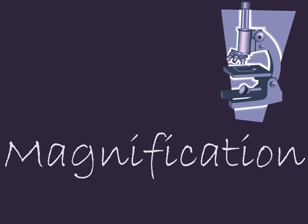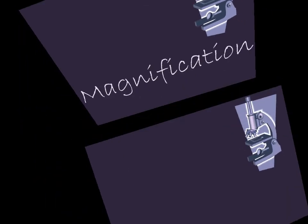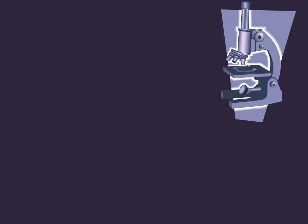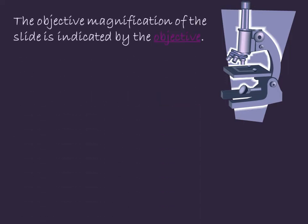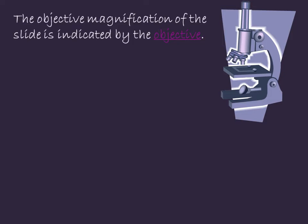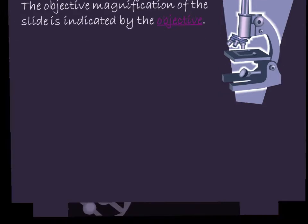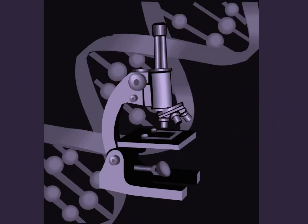Let's think of magnification. There are two components of magnification you need to keep in mind. The first is the objective magnification, which is indicated by the objective lens. Just for reference, this would be the objective lens. Some microscopes have three, four, or even more, depending on which microscope you're using.